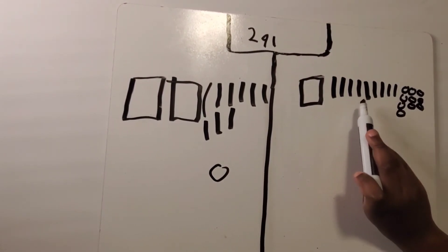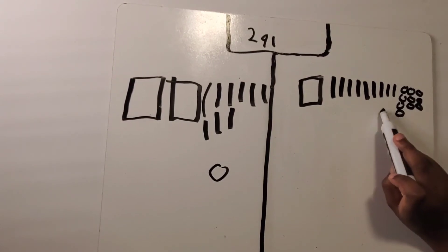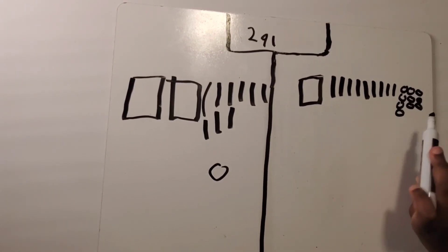Ten, twenty, thirty, forty, fifty, sixty, seventy, eighty, ninety, a hundred. So all of this is two hundred.